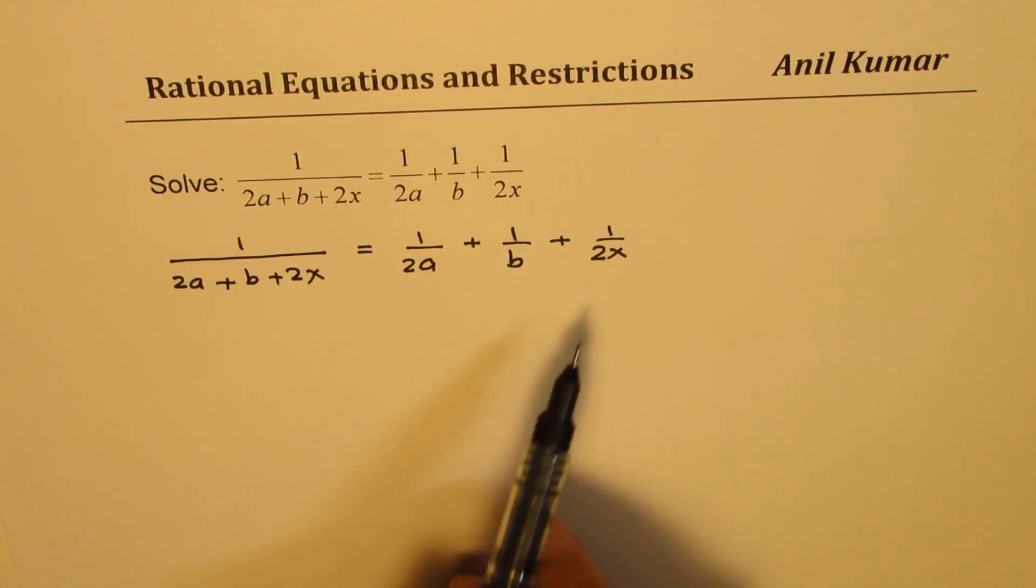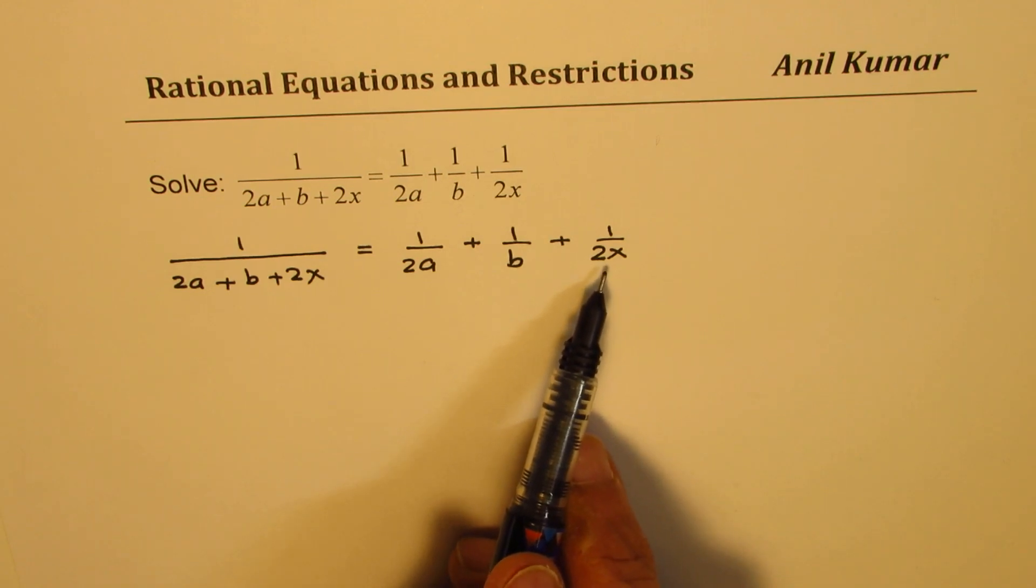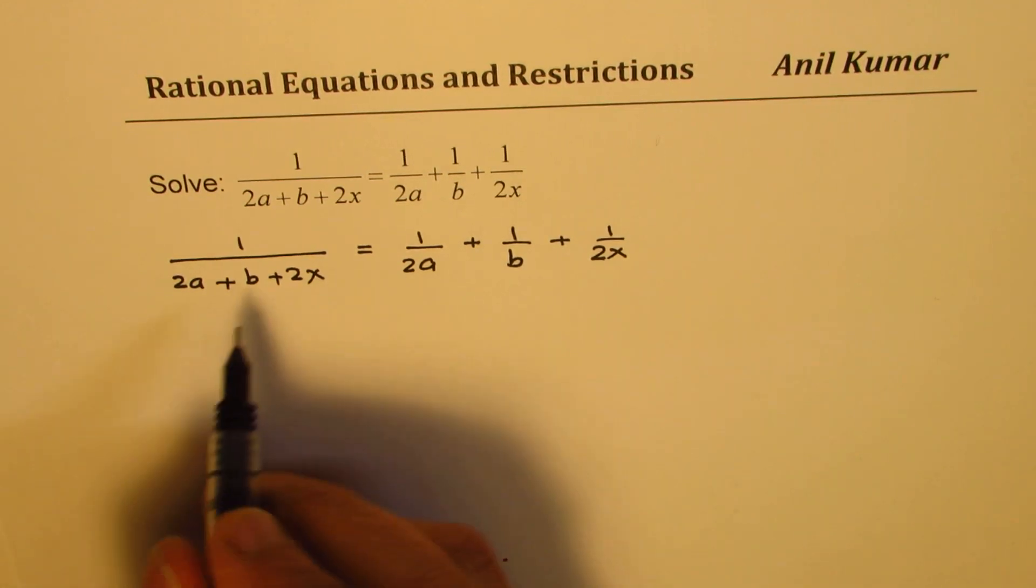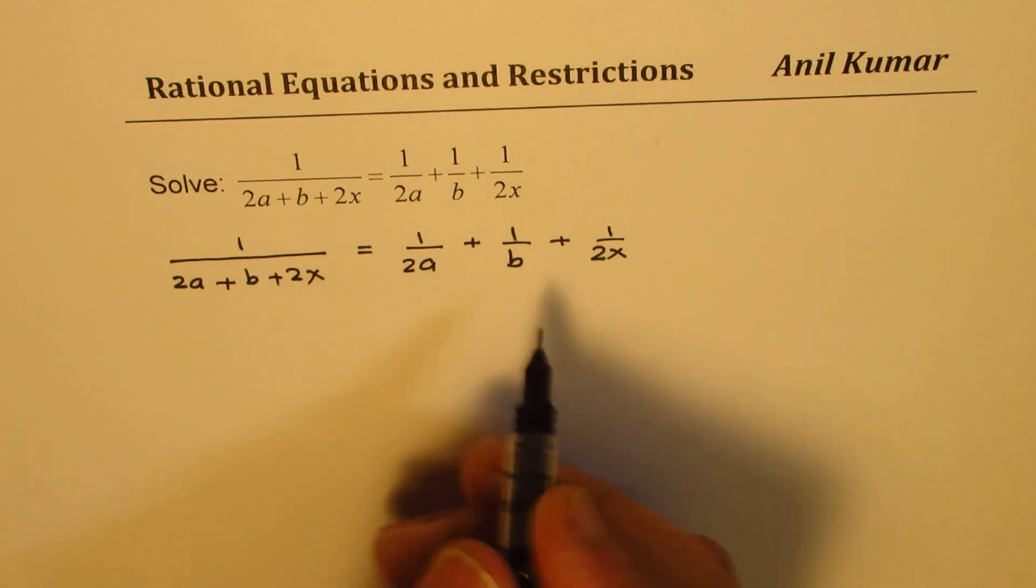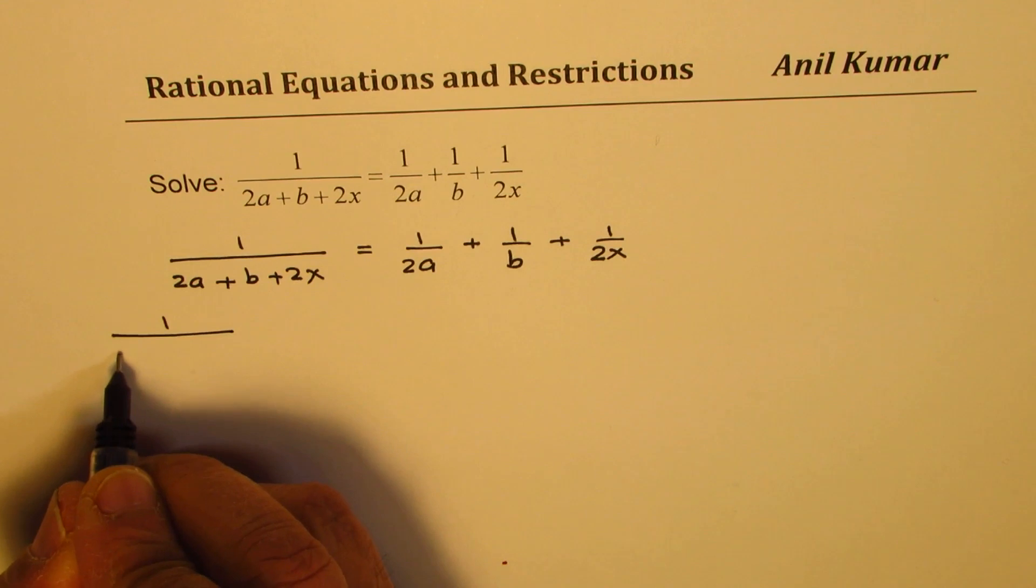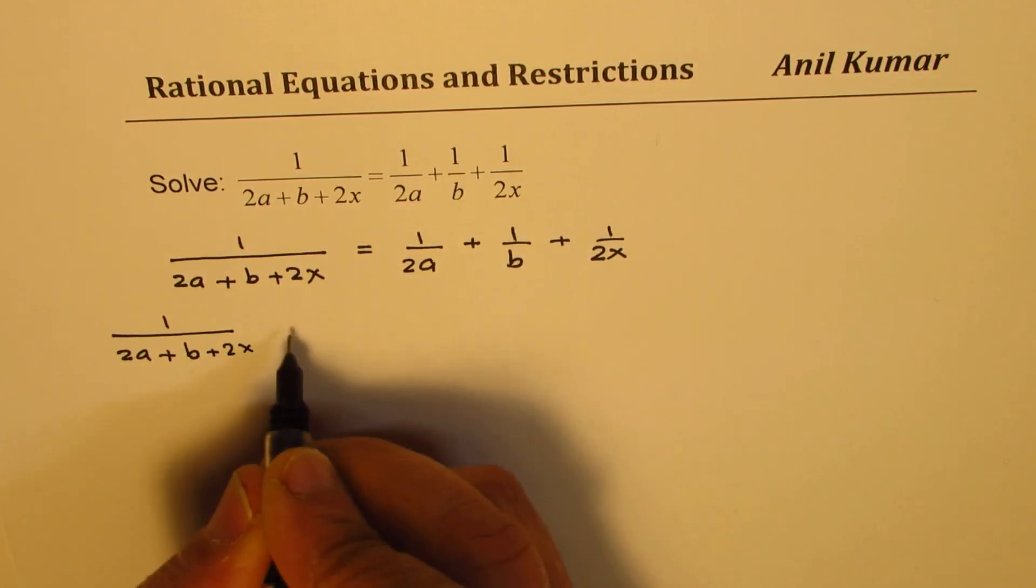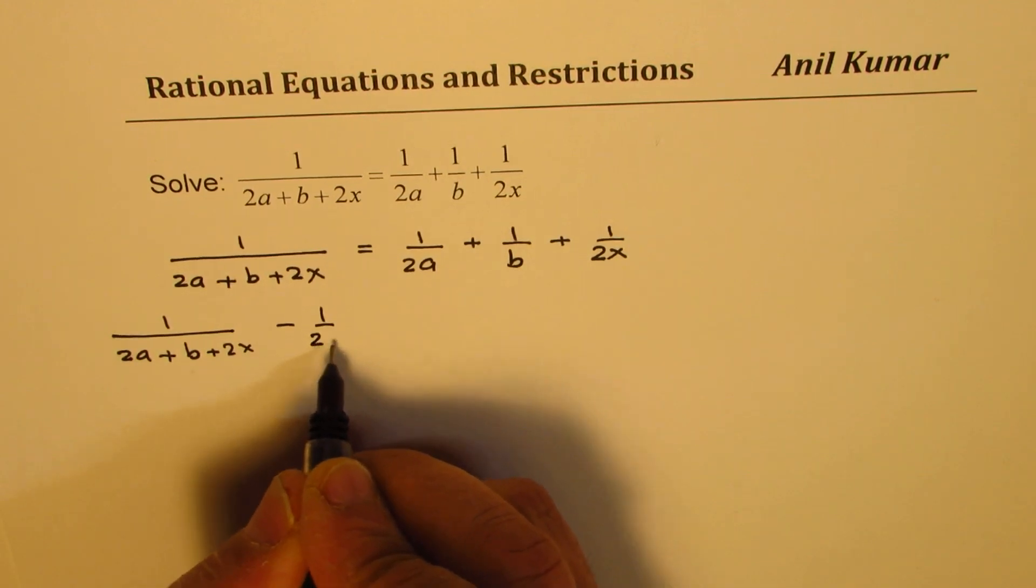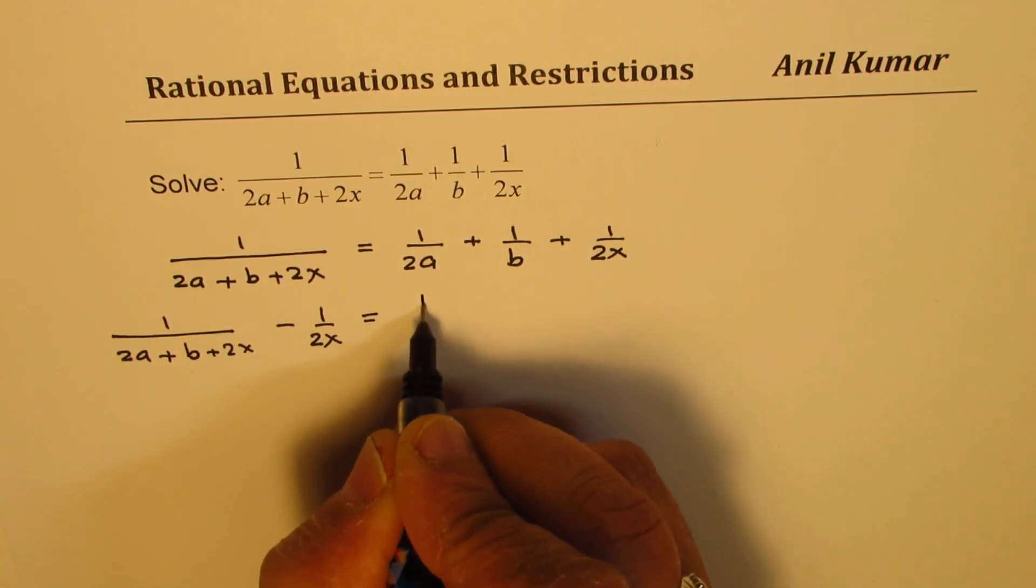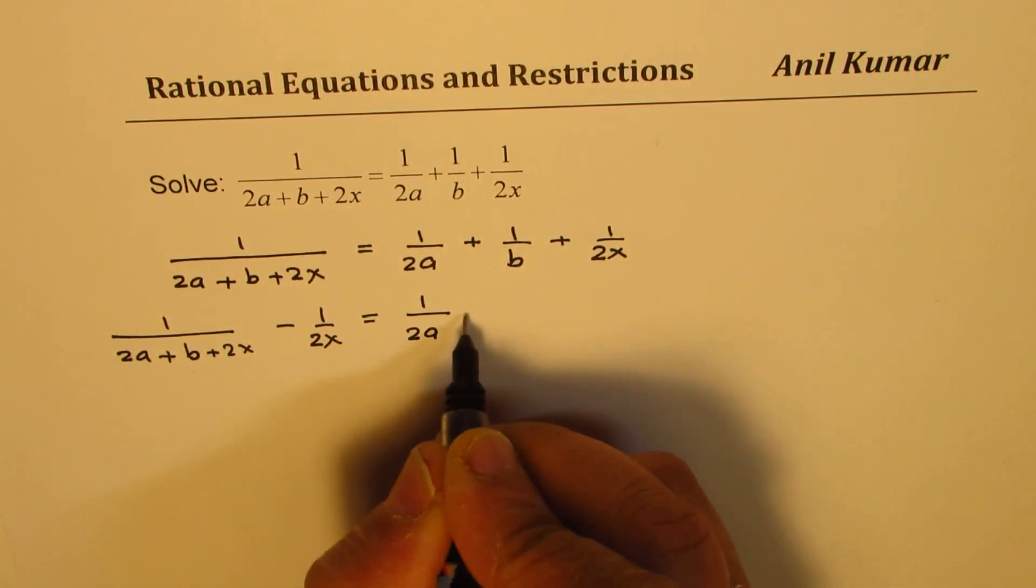To solve we need to find what x is. Let's bring the x terms together. So we have these two terms with x, so I will bring it on the left side. We have 1 over 2a plus b plus 2x minus 1 over 2x equal to 1 over 2a plus 1 over b.